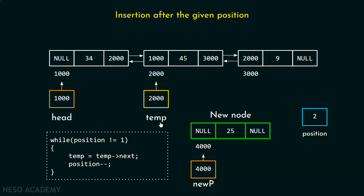The movement of the temp pointer depends upon this position variable. In this while loop, I am checking the condition: is position not equal to one? If it is the case, then we can move; otherwise, we will exit the loop. When position becomes one, we get outside of this loop. Inside the while loop, I am moving the temp pointer towards the right, and the position variable is decremented.